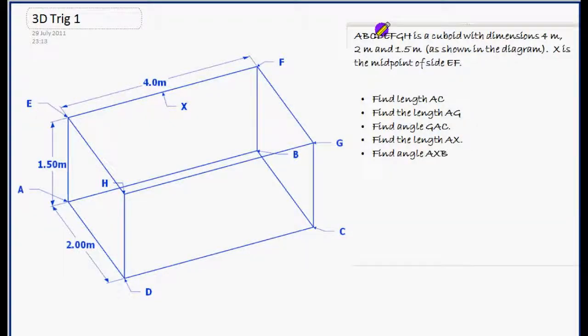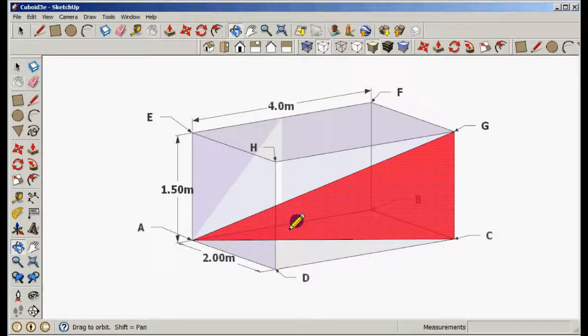We're going to look at the third part of this question: find the angle GAC. If we go into Google SketchUp, this is the triangle we were looking at previously.